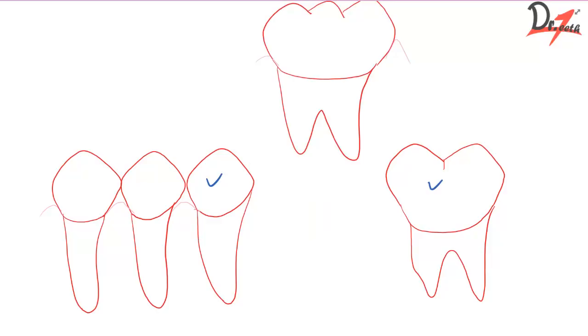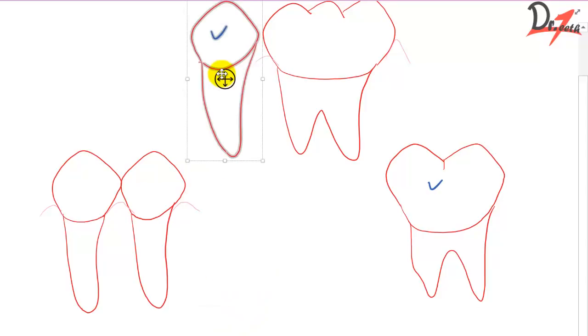But what if two teeth are missing? For example, if this teeth is also missing from here, then now we have two edentulous spaces here and now this will become the abutment teeth. Now in this case also, the missing teeth can be replaced by taking two adjacent teeth for support.